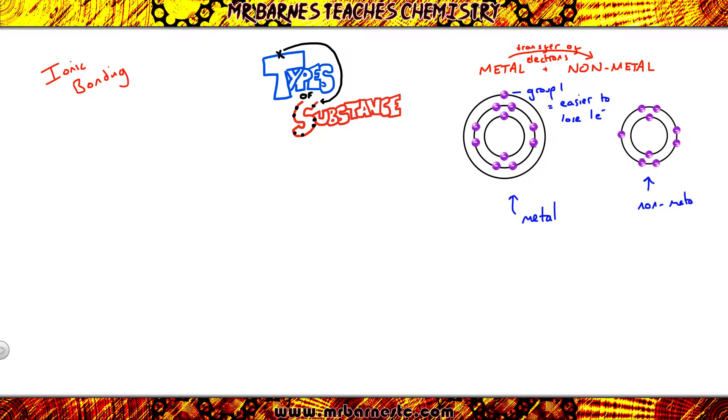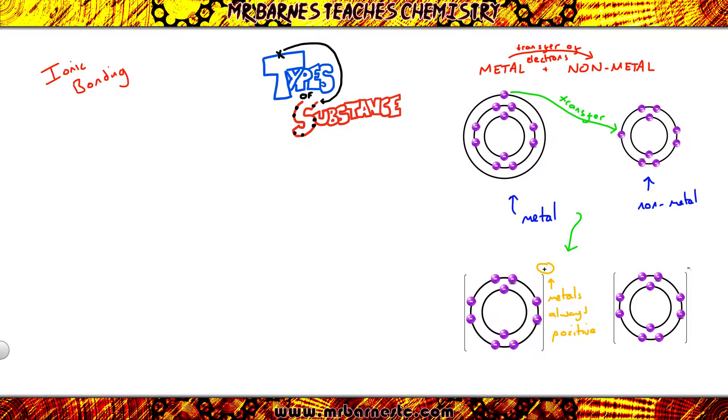The element on the right has got seven electrons in the outer shell, it's a non-metal, therefore it's easier for it to gain one electron. So what will happen in ionic bonding is the metal will give its electrons or transfer them to the non-metal, and as a result of that you end up with charged particles. These charged particles are called ions, which are atoms that have gained or lost electrons.